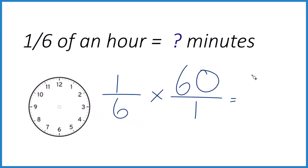1 times 60, that's 60, and 6 times 1 is 6. If you divide 60 by 6, you get 10, and that's 10 minutes. So there are 10 minutes in one-sixth of an hour.